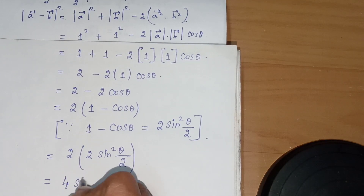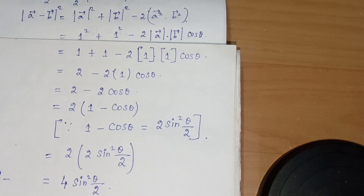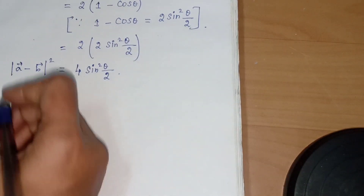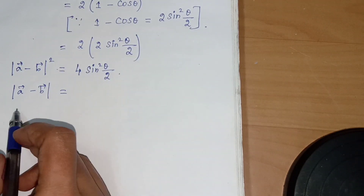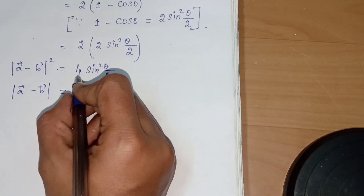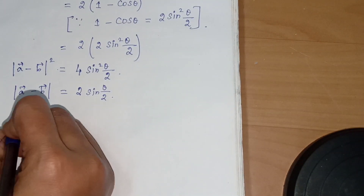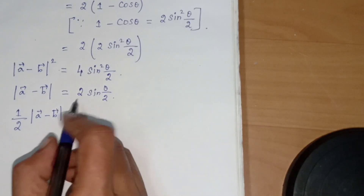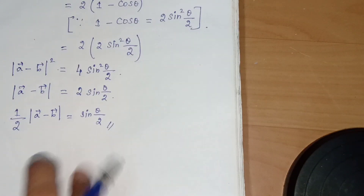So |A vector minus B vector|² equals 4 sin²(θ/2). Taking the square root, |A vector minus B vector| equals 2 sin(θ/2). Dividing both sides by 2, half times |A vector minus B vector| equals sin(θ/2). Hence proved. First subdivision over.